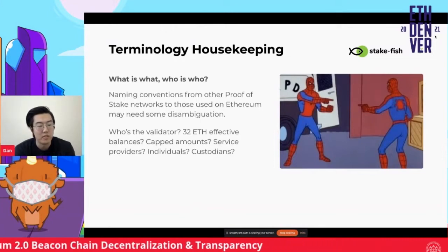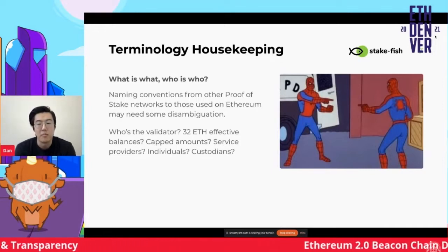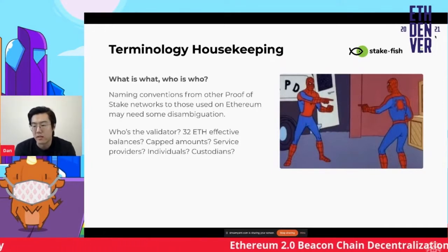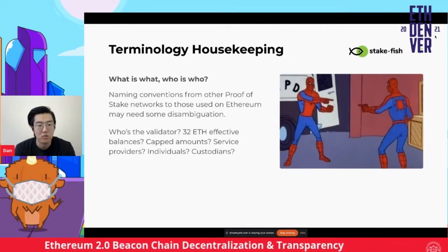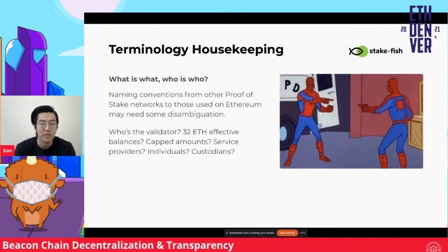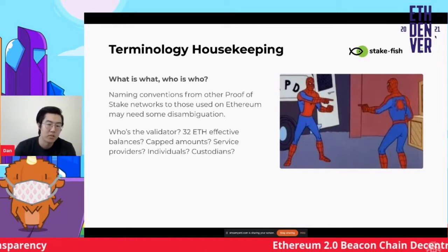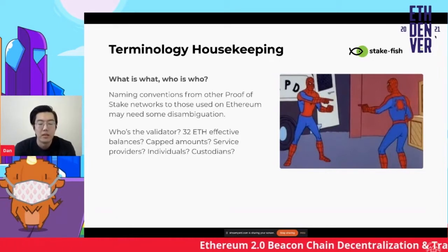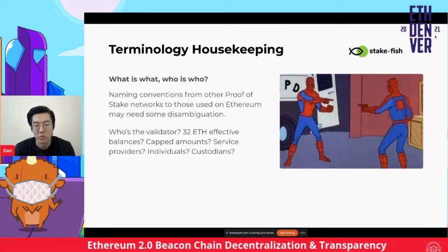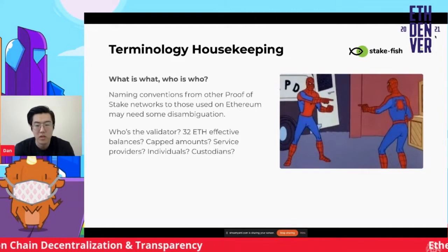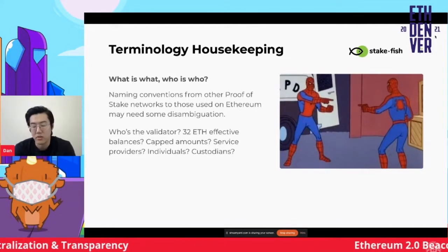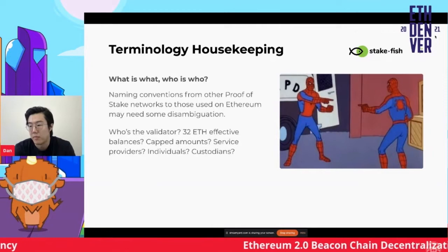On Ethereum, you technically are able to send an infinite amount of tokens, but the way validators are described is broken down into 32 ETH increments, where a validator is determined by 32 ETH — so it's somewhat capped. There's also this concept of who is who: custodians, non-custodial providers, custodial providers, centralized exchanges, independent setups.